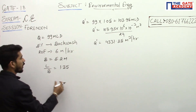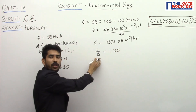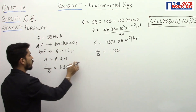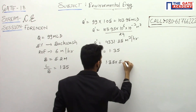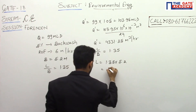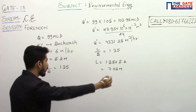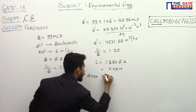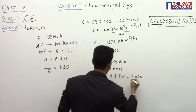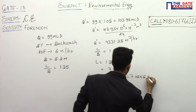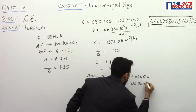Now, L by B equals 1.35 and the width of each filter is 5.2 meters. So L equals 1.35 into 5.2, which gives L equal to 7.02 meters. We now have the length and width of one filter. Area of one filter equals 7.02 into 5.2, which equals 36.50 square meters. This is the area of one filter unit.